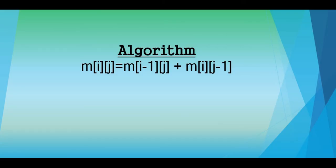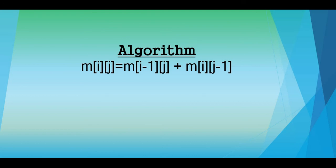Here is the algorithm: m[i][j] equals m[i-1][j] — the cell at the top — plus m[i][j-1] — the cell to the left. With this we have come to the end of this video. I look forward to helping you with algorithms and programming. If you liked the explanation, give it a thumbs up. Thank you and goodbye.